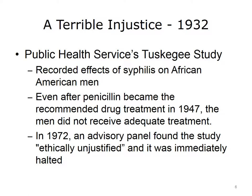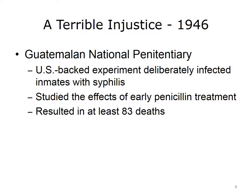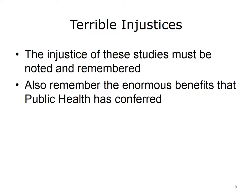The study was not halted until 1972, after an advisory panel found it to be ethically unjustified. As a result of this experiment, 128 men died, 40 wives were infected, and 19 children were born with congenital syphilis. The second stain on the public health record is a U.S.-backed study that involved the deliberate infection with syphilis of prisoners in a Guatemalan prison in 1946. The study was done to investigate the effects of early penicillin treatment. At least 83 people died as a result of this experiment. The injustice of these two studies must be both noted and remembered.